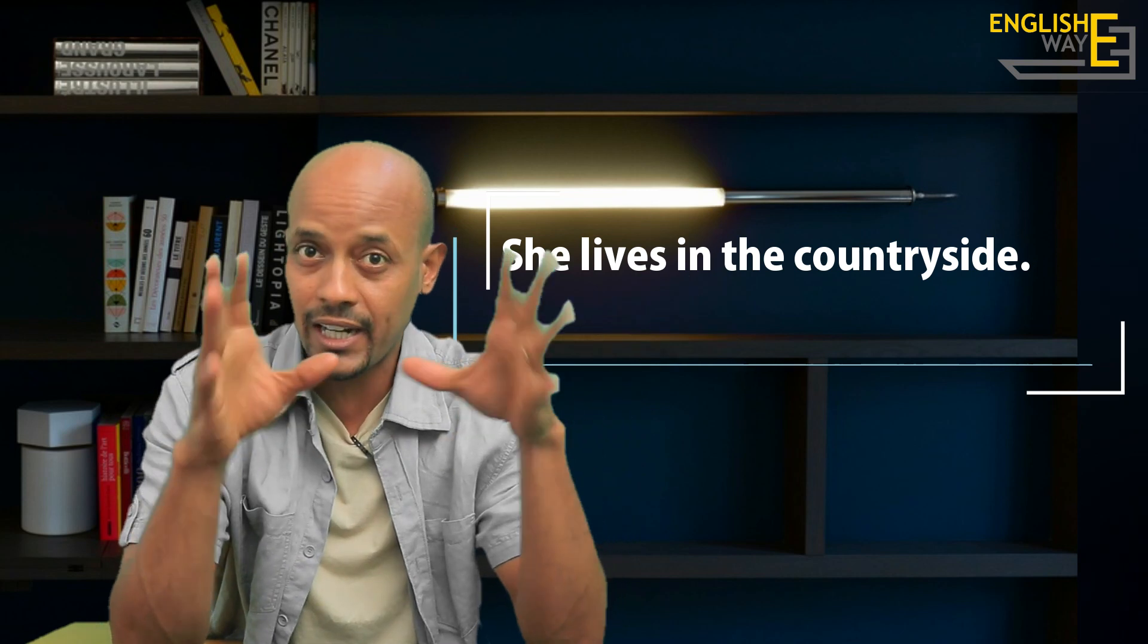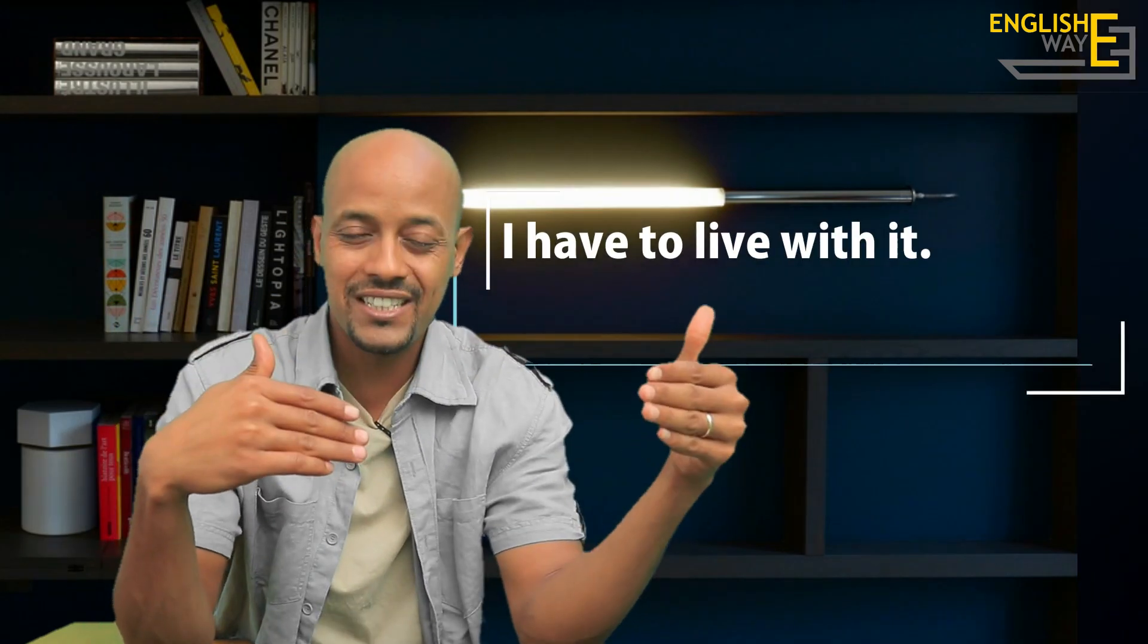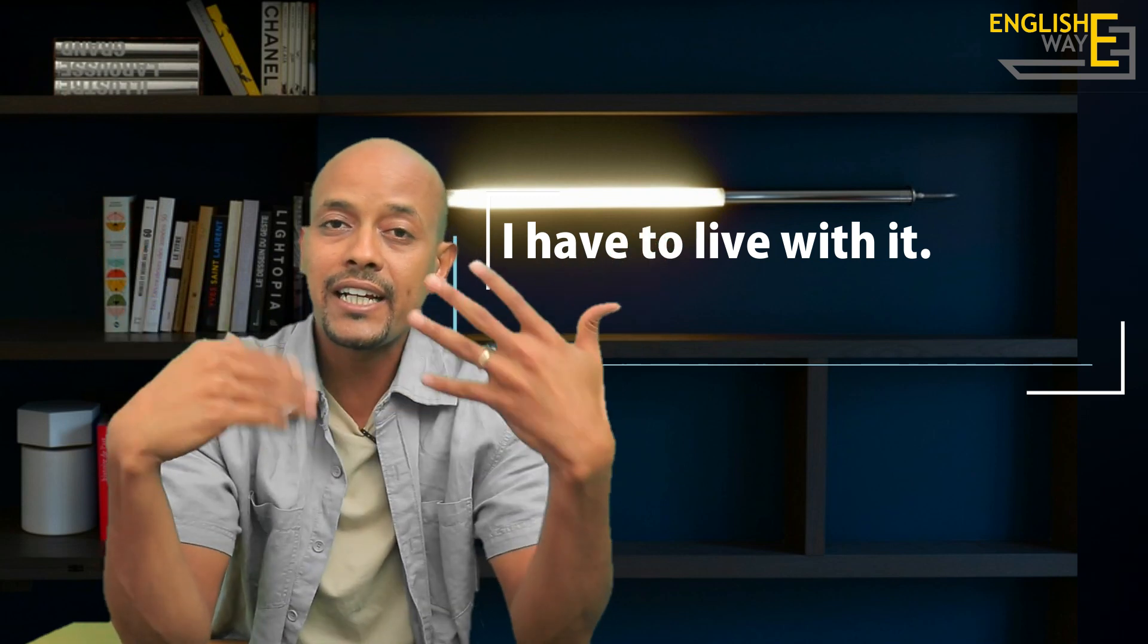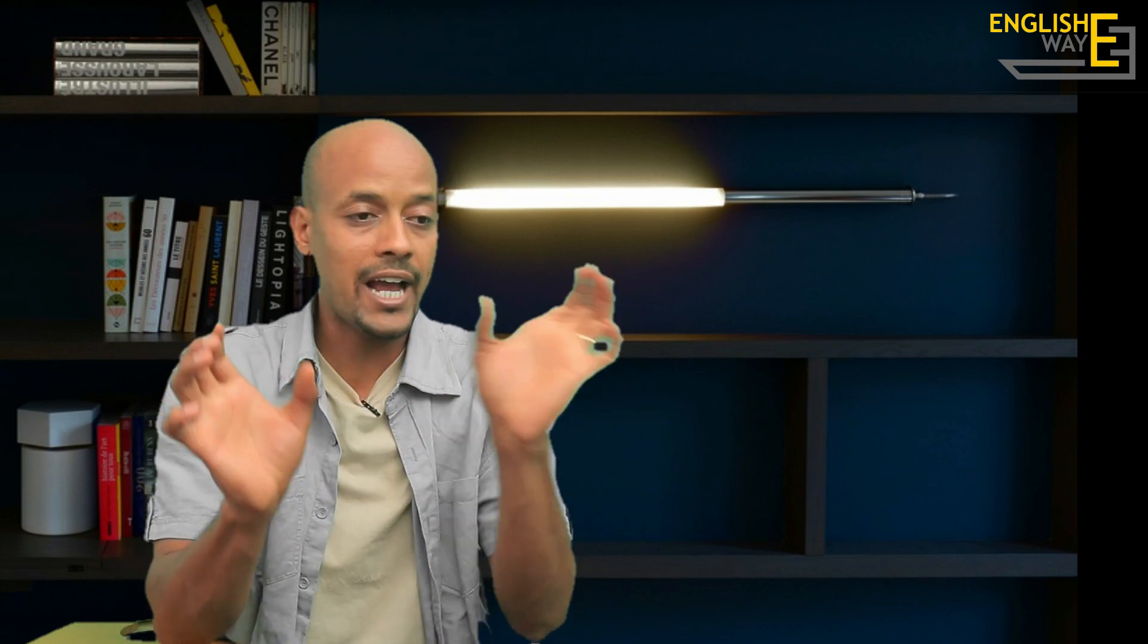We can use live when you say I have to live with it. I have to live with it. When you say I have to live with it, I have to live with the consequences of whatever I do. So when you say I have to live with it, if you're talking to somebody else, she has to live with it, or they have to live with it.